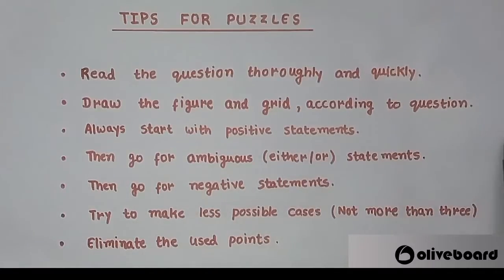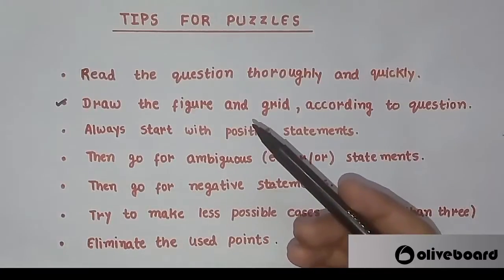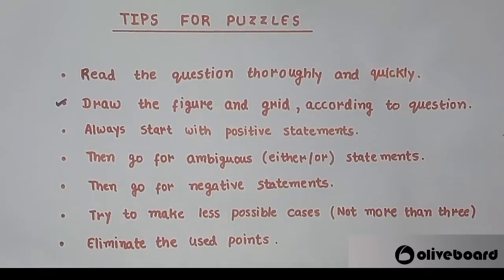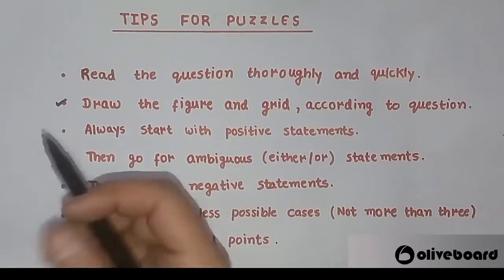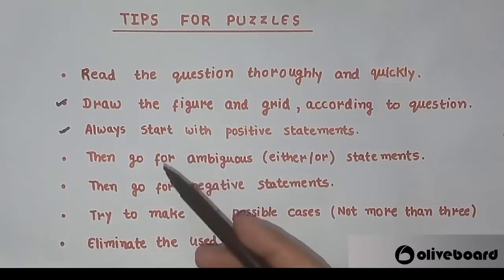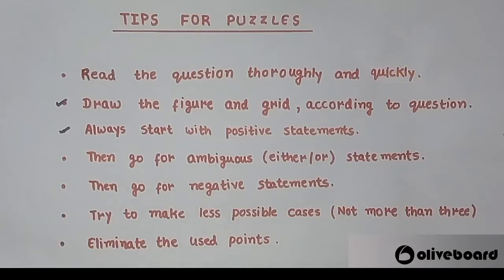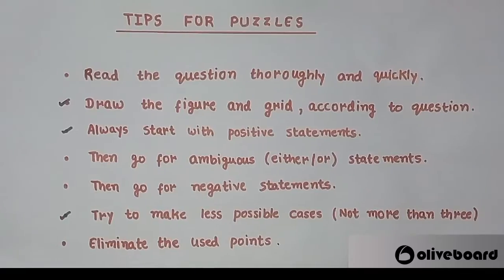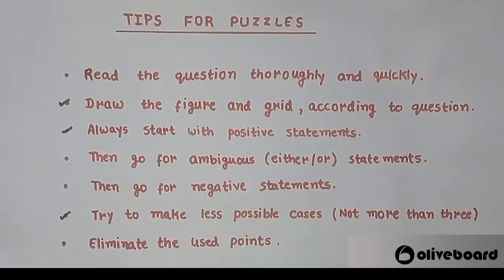The next tip: draw the figure and grid according to the question. If it is a circular arrangement, quickly draw a circle, and it is always better to take two possibilities. The next tip: always start with positive statements — as explained while solving the question. Starting with positive statements helps you collect sufficient data pointing toward the correct answer. Starting with negative or ambiguous statements risks mistakes and wastes more time. Then: try to make the least possible cases, and eliminate used points as you go — when all three types of statements are applied, many possible cases are automatically eliminated.